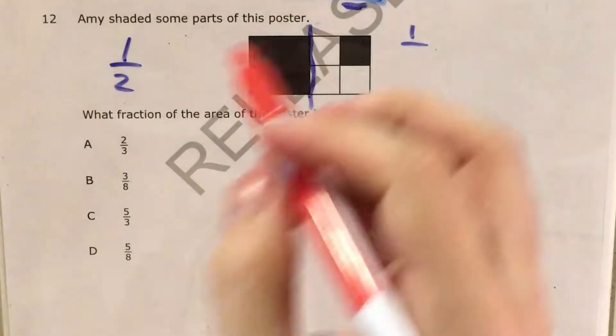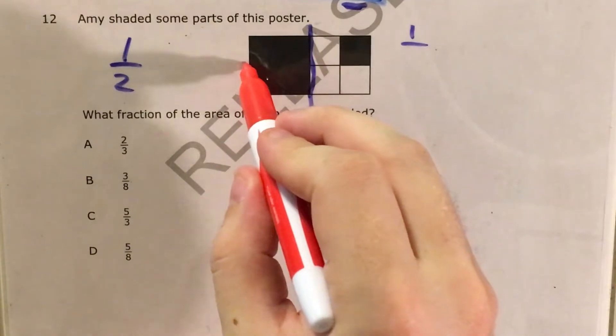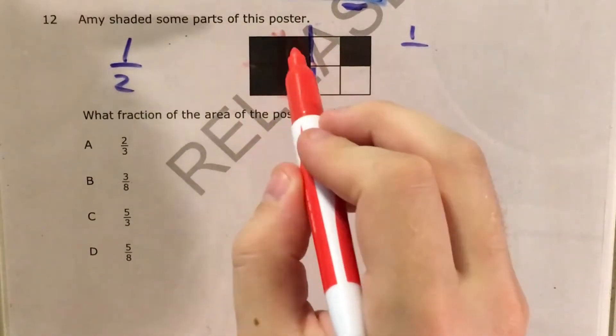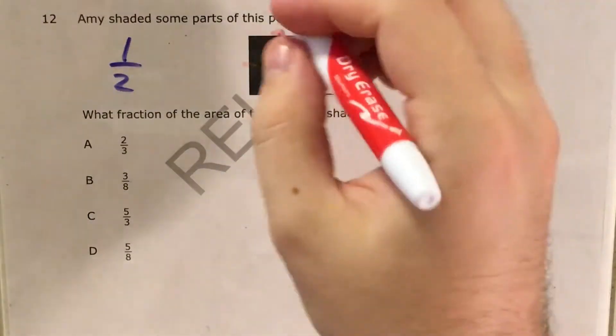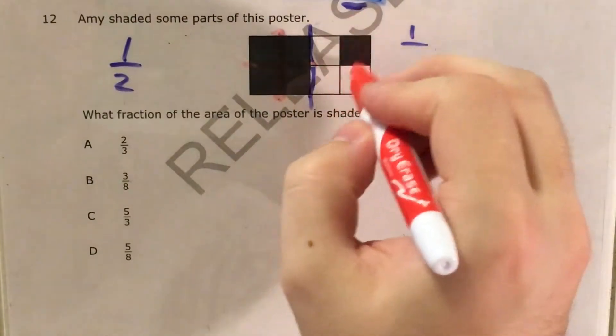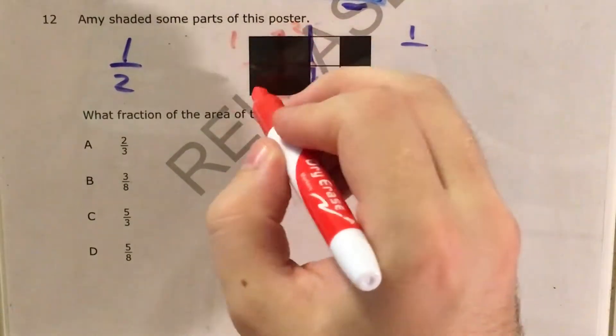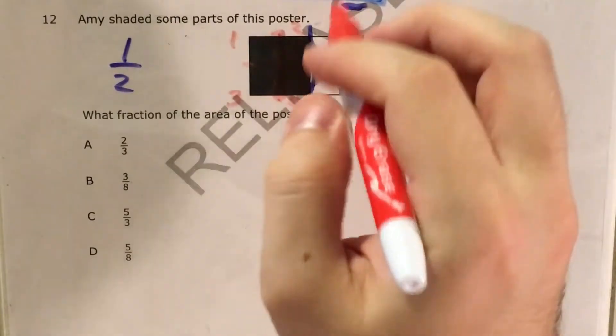So in order to actually figure out what that something is, that would be the denominator of this fraction, I'm gonna go ahead and imagine what would happen if I split this piece or this part of the poster here into four pieces. You probably can't see too well but I actually split this up just like this one over here into one, two, three, four pieces.